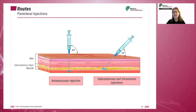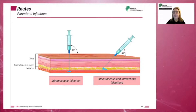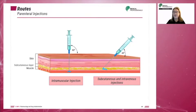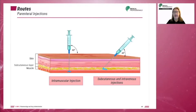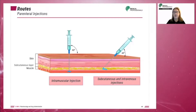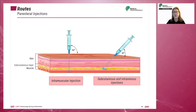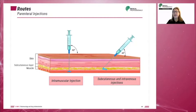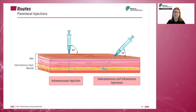Needle position is important and based on the route used. For intramuscular injection, the needle is inserted at 90 degrees to the skin. For subcutaneous and intravenous injections, the needle is inserted at 45 degrees to the skin.